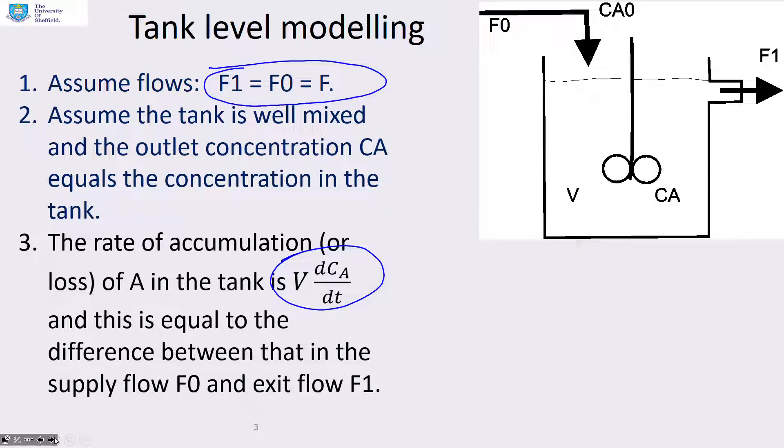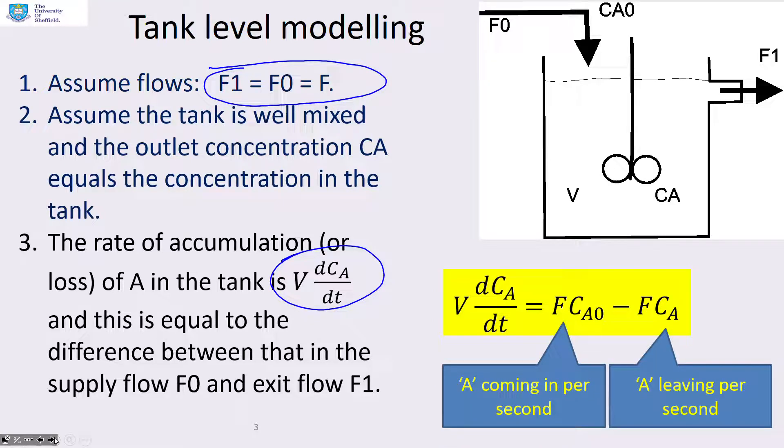Now here's the modeling part. The rate of accumulation or loss of this chemical A in the tank is given by volume times dCa/dt, and this must be equal to the difference between the amount of A coming into the system through flow F0 and the amount going out through flow F1. So you end up with this simple equation V dCa/dt equals flow times concentration coming in minus flow times concentration going out.